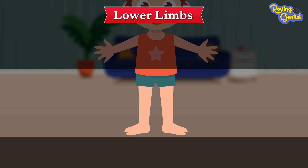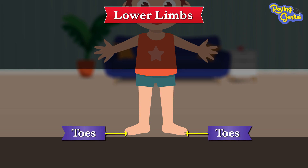Our feet support the entire body so that we can walk. We have five toes on each foot, just like the fingers on our hand. Our toes help us keep our balance while walking.